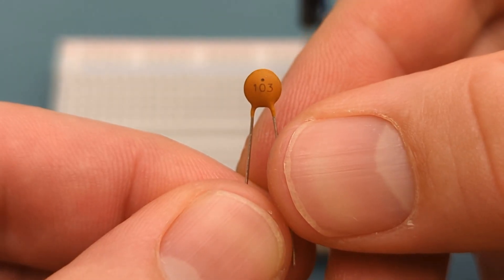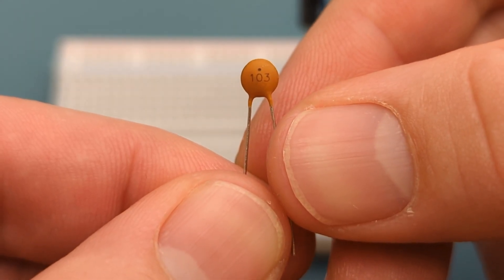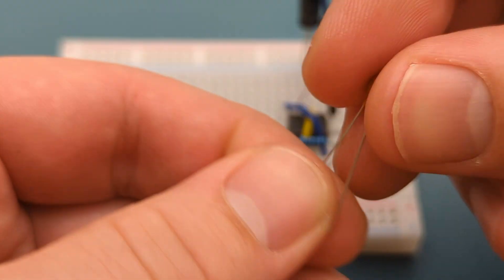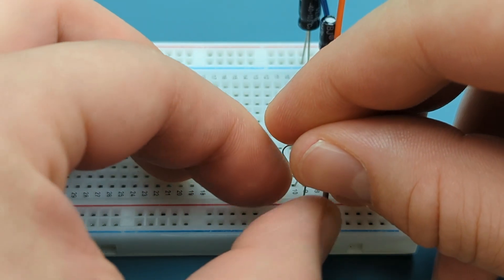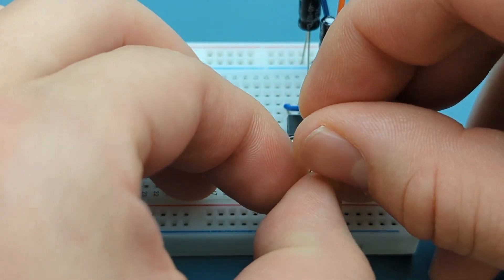Insert a 103 capacitor into pin 5 or control and the negative rail. The 103 represents a capacitance value of 0.01 microfarad capacitor. The 103 is non-polarized.